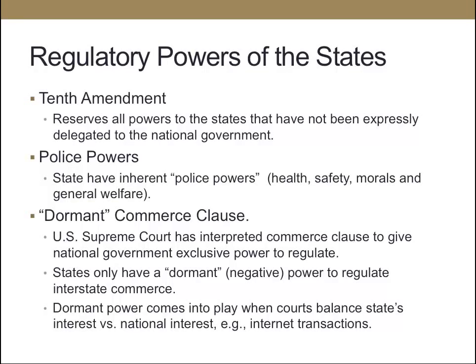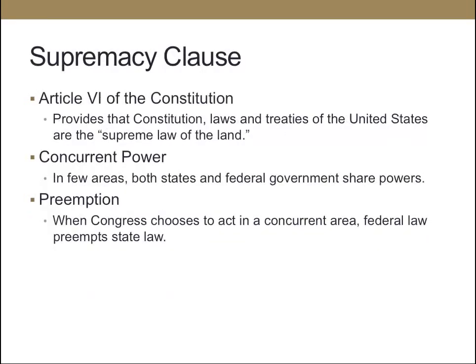For example, there wasn't internet back when the Constitution was framed, so there could be a federal regulation that impacts states, but there could also be a state law that impacts interstate commerce where the court might determine the state has a significant interest — for example, taxing goods purchased on the internet. The Constitution says that the laws and treaties of the United States are the supreme law of the land. In some cases there is concurrent power, meaning both state and federal government share power, but if Congress has power in that area, federal law preempts state law.